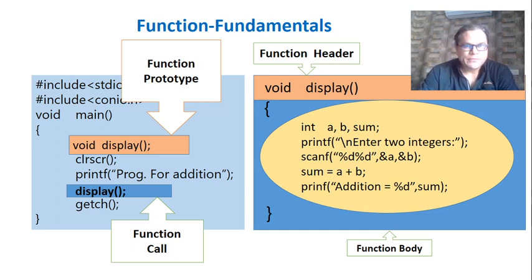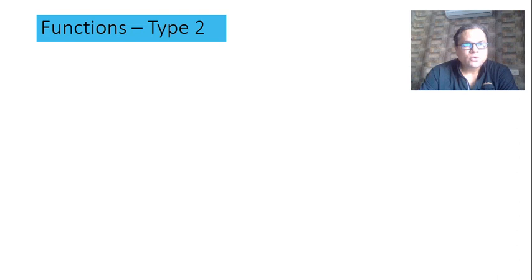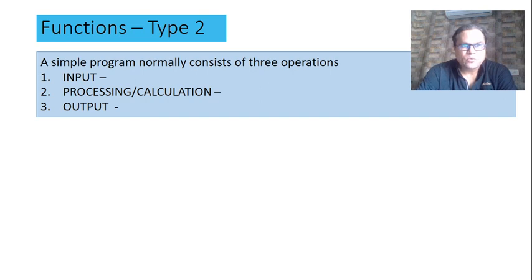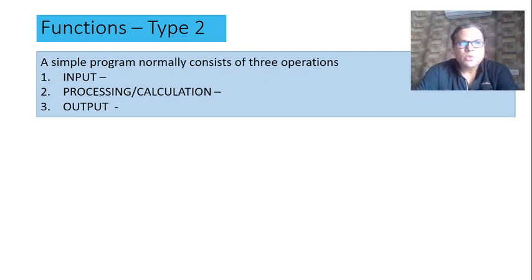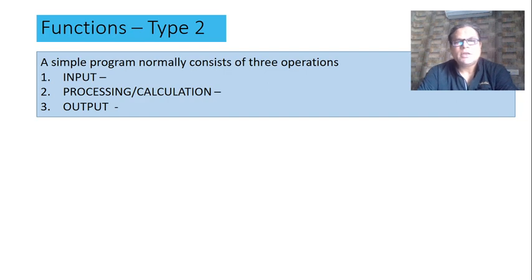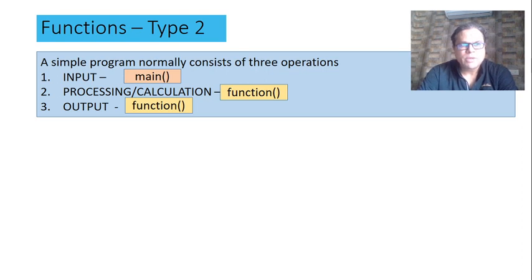Now let us start today's session. We want to know about the second type of function. A simple program normally consists of three main operations: input, processing or calculation, and output. We need to change our strategy for work distribution. In the previous type, main did nothing and the function did everything. Now let us have a different work distribution — the input will be performed by main.